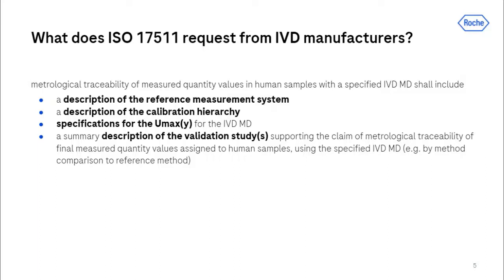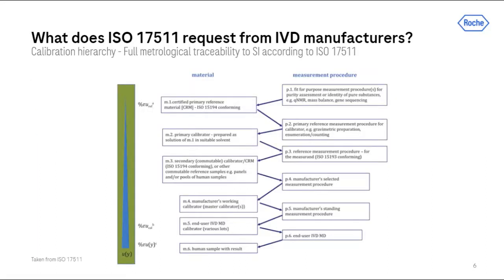Per ISO 17511, IVD manufacturers shall describe the reference measurement system and calibration hierarchy, specify the uncertainty of their device, and also describe the validation studies to show and confirm the claim of metrological traceability. The calibration hierarchy as outlined in ISO 17511 starts preferably with gravimetry or qNMR as the purest and highest-order measurement procedure. The unbroken traceability chain then alternates between value assignment of a lower-order reference material and calibration of a lower-order method, down to the final lowest order — the patient result. With each step downward, the uncertainty increases.